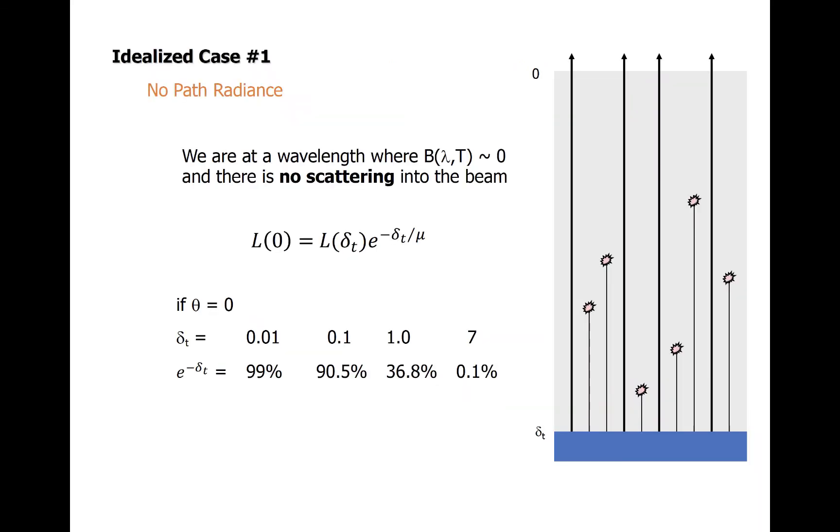If we consider an idealized situation where there is no scattering into the beam, and the Planck radiance at the wavelength of interest is approximately zero, the radiance at the top of the atmosphere is simply radiance at the bottom of the atmosphere reduced by the direct transmittance, here also accounting for the angle, even though the figure illustrates a vertical path length. And the angle is accounted for right here with the Mu.